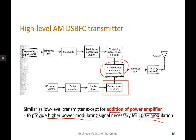In the high level transmitter block diagram, the modulator modulates the carrier signal, and a power amplifier is used on the carrier signal path to produce higher power for a higher modulated wave output. After the modulator, the signal only needs to be filtered before transmission through the antenna — unlike the low level transmitter which requires more processing stages.